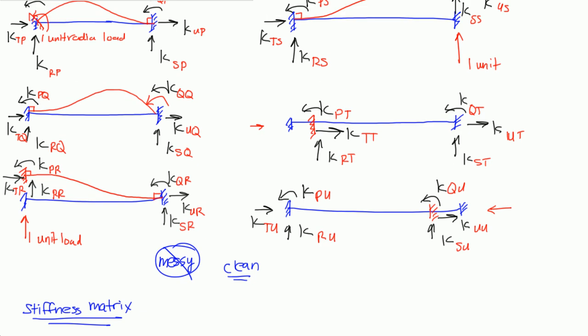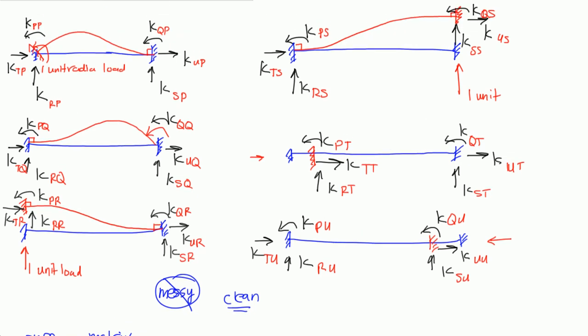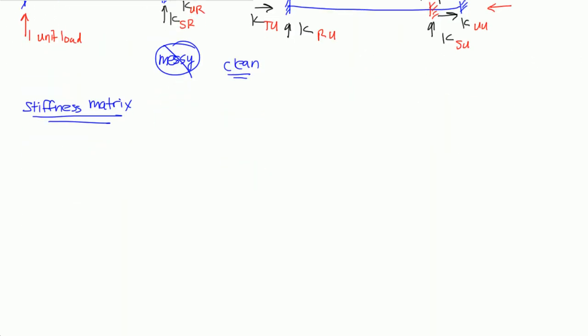We want to put all these K values in matrix form. Notice that each diagram has six different things going on — six different K values that correspond to the degrees of freedom: P, Q, R, S, T, U. So since each diagram has six different values, this matrix is going to be a six-by-six matrix.